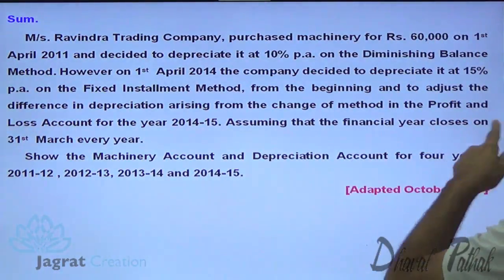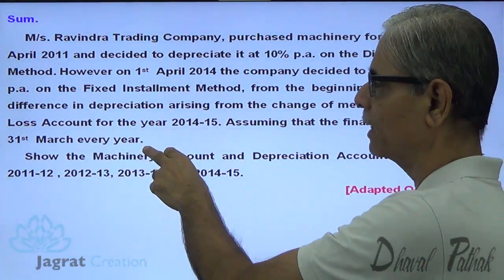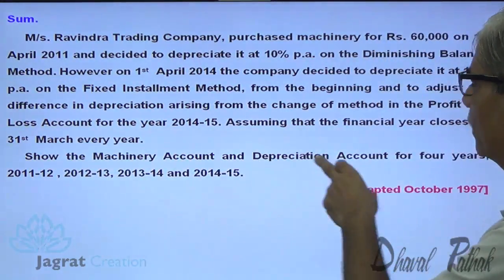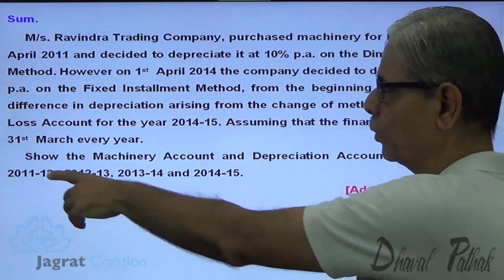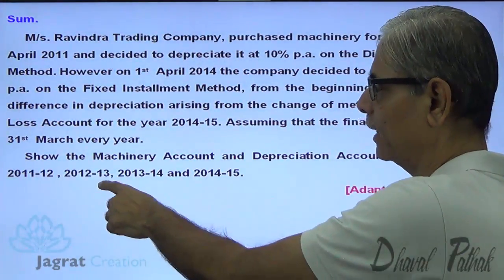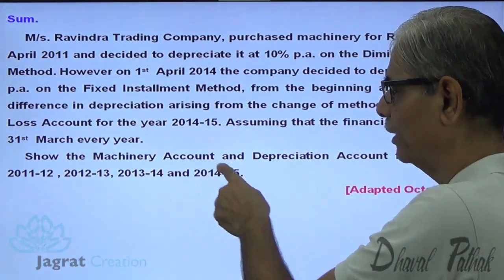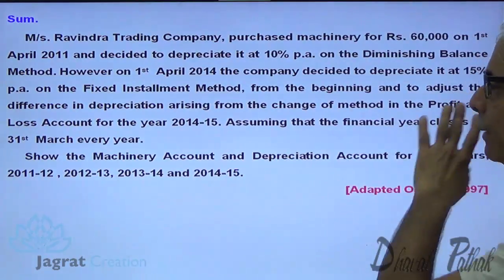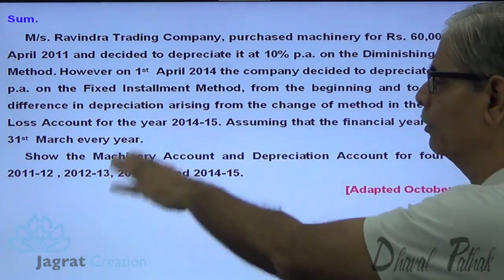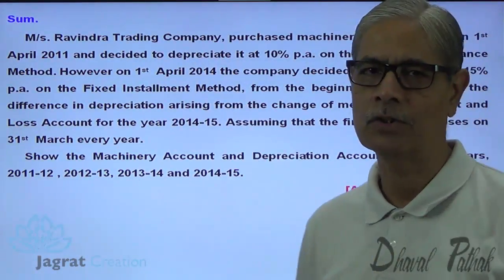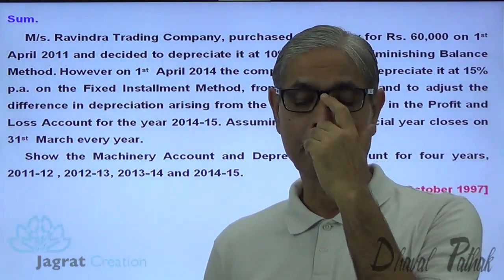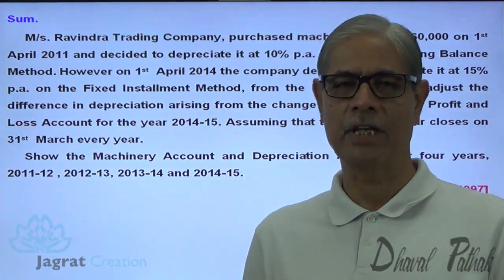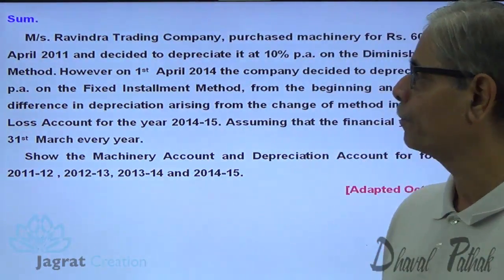The financial year closes on 31st of March each year. We are required to prepare the machinery account and depreciation account for 4 years: 2011-12, 2012-13, 2013-14, and 2014-15. The important point here is the change in the method of depreciation after 3 years.